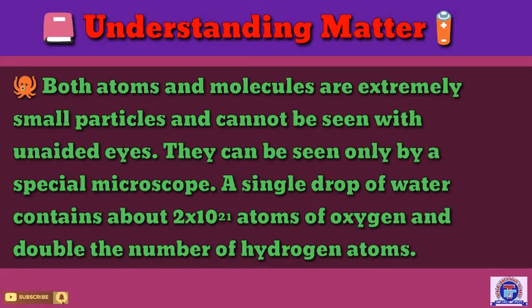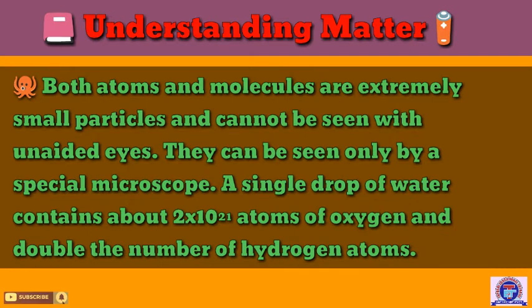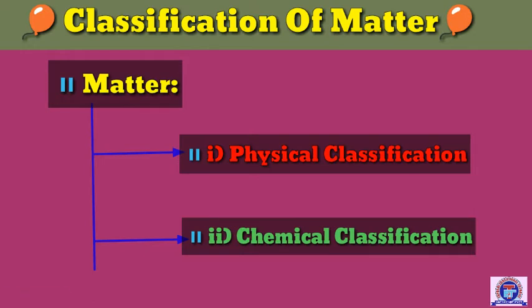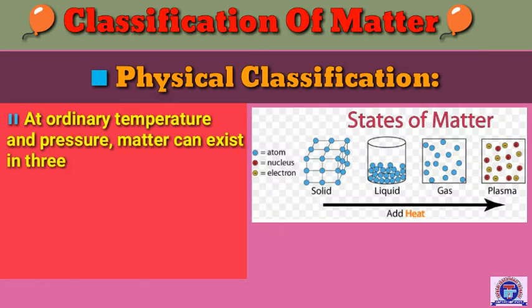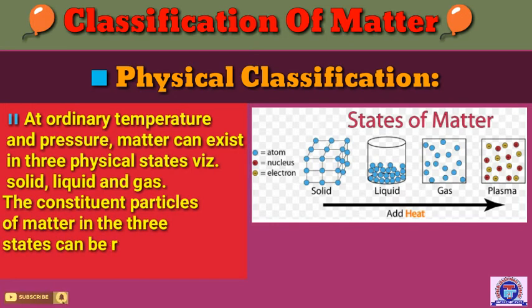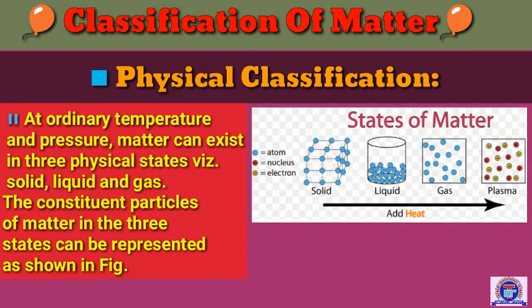Matter can be classified in two different ways: physical classification and chemical classification. In physical classification, at ordinary temperature and pressure, matter can exist in three physical states: solid, liquid, and gas. The constituent particles of matter in these three states can be represented as shown here.